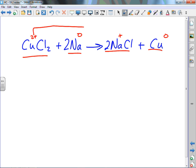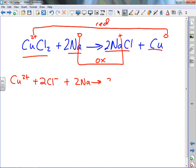So copper went from plus two to zero, and sodium went from zero to plus one. Copper decreased its oxidation number, copper was reduced. Sodium increased its oxidation number, so it was oxidized. We're assuming these are all aqueous, then we want net ionic equations.